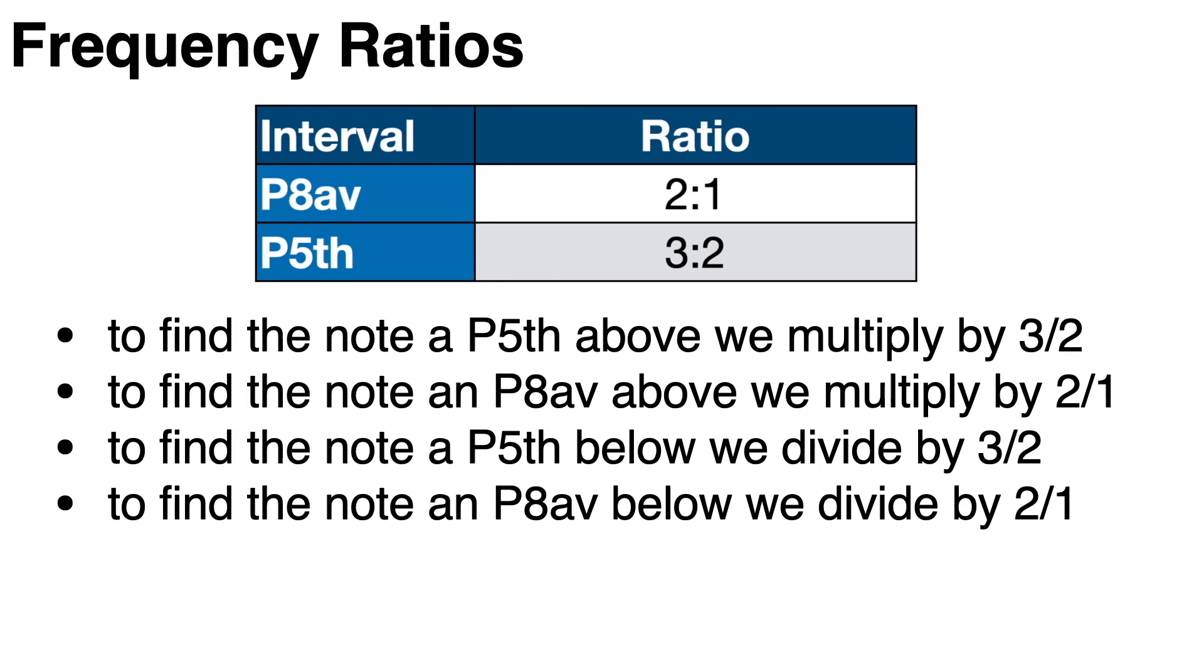But we can also tune down or anti-clockwise through the circle of fifths to give us flat notes. Now remember that to find the note a perfect fifth above, we multiply by three on two, and to find the note an octave above, we multiply by two on one. Conversely, to find the note a perfect fifth below, we divide by three on two, and to find the note an octave below, we divide by two on one.